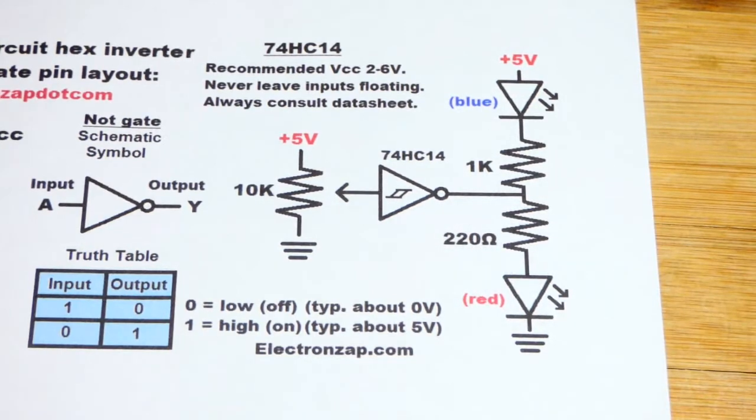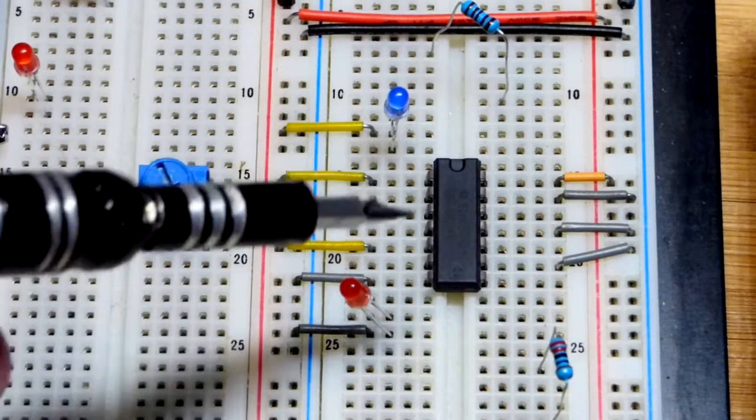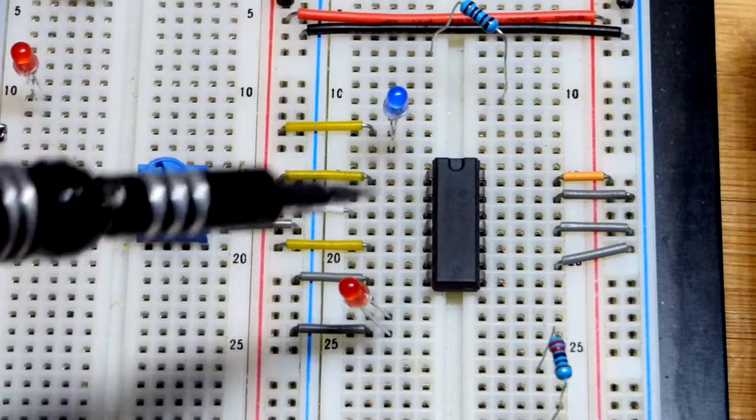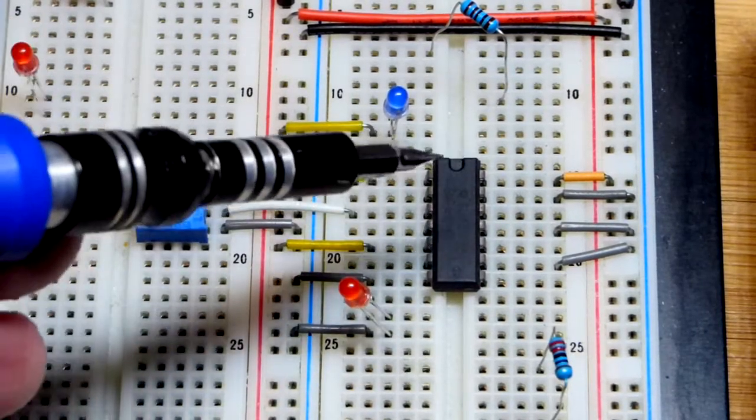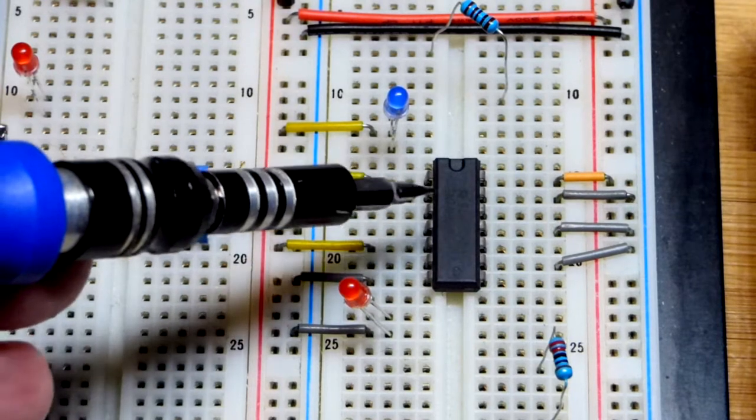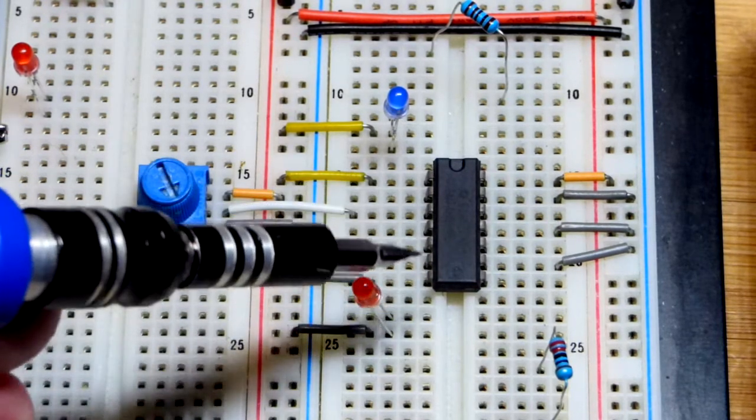Here we have it on the board. It's not quite complete yet. You can see the little divot there, so that's pin 1, 2, 3, 4, 5, 6, 7, and then you work your way across: 8, 9, 10, 11, 12, 13, 14.